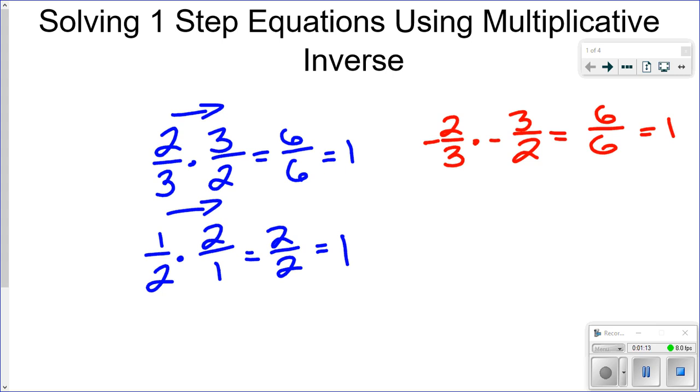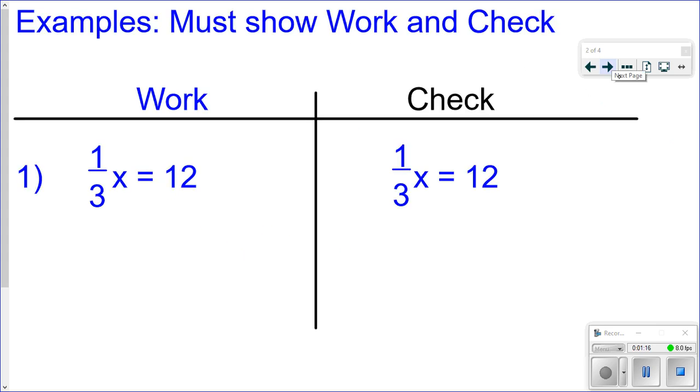So let's see how we can use that with solving equations. All right, so I have my screen split up into a work and a check, because with any equations, you can always check your work by plugging in the answer you get and seeing if it checks out. So to solve an equation, I'm trying to get the variable by itself. So I'm trying to get rid of the 1 third here. So I'm going to use multiplicative inverse to do that. So I'm going to multiply both sides of this equation by 3 over 1, which is the reciprocal of 1 third.